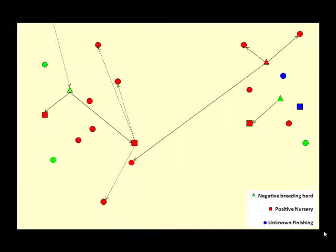So the traditional ASV classification will give you the traditional maps that we have been seeing from Enrique, Dr. Morrison, Spencer in the university. Red will be positive and green will be negative and blue will be unknown. Triangles are usually used for cell farms, squares for nurseries, and rounds or circles for finishing sites.